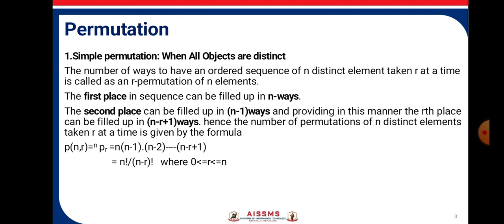Simple permutation when all objects are distinct. The number of ways to have an ordered sequence of n distinct elements taken r at a time is called as an r permutation of n elements. The first place in sequence can be filled up in n ways. The second place can be filled up in n-1 ways.